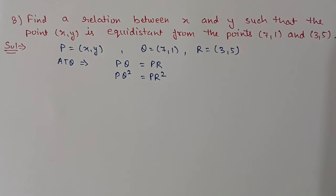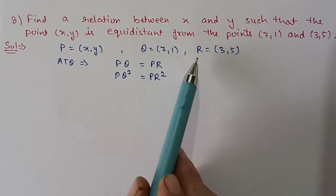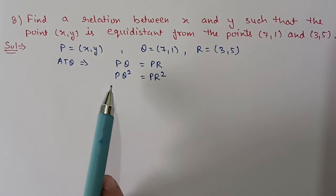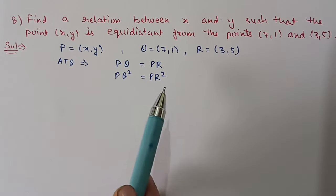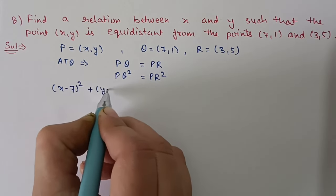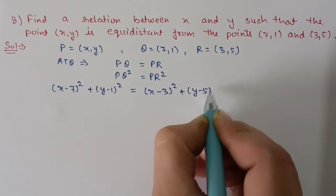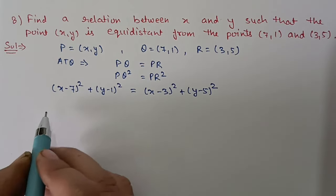Question number 8: Find a relation between x and y such that the point (x, y) is equidistant from the points (7, 1) and (3, 5). Let point P be (x, y), Q be (7, 1), and R be (3, 5). According to the question, PQ = PR, so PQ² = PR². Applying the distance formula: (x - 7)² + (y - 1)² = (x - 3)² + (y - 5)².